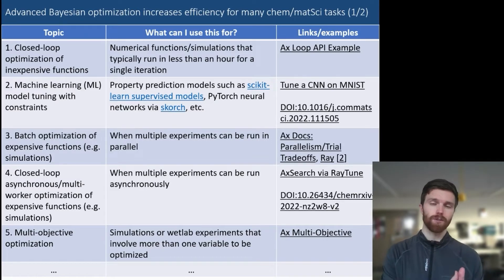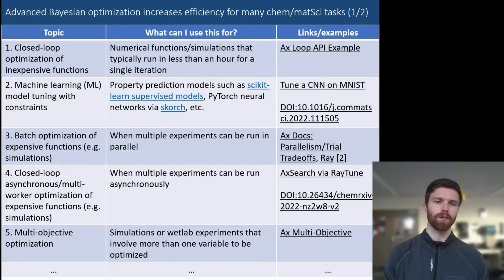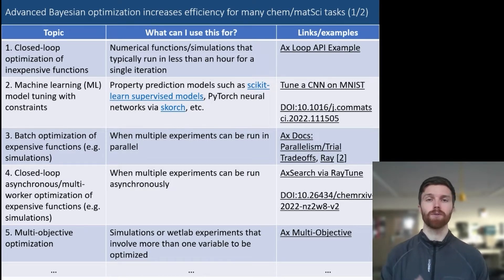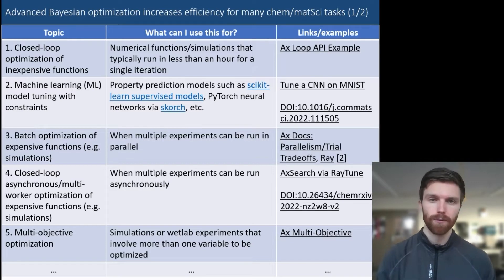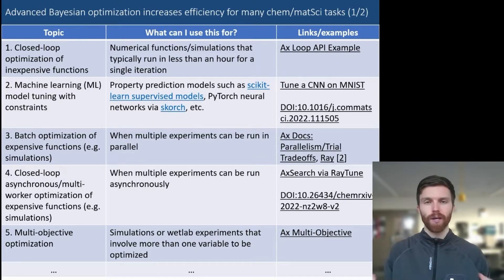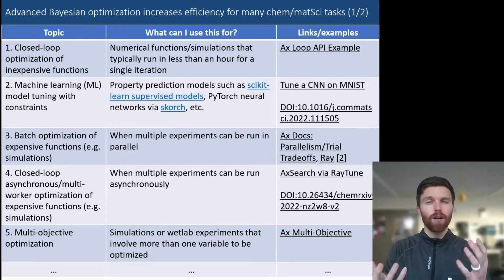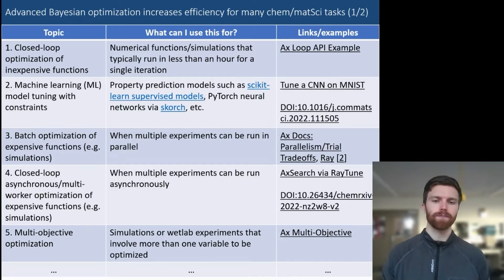We also took a look at how to adapt the Service API, which allows additional configurability for multi-objective optimization, where you're looking for optimal trade-offs between multiple, often-competing objectives.